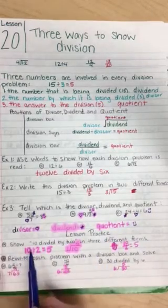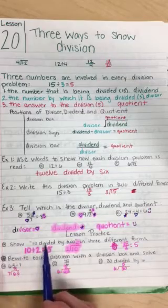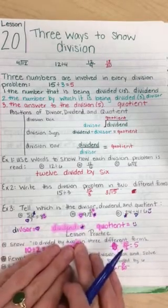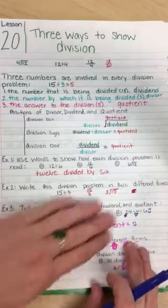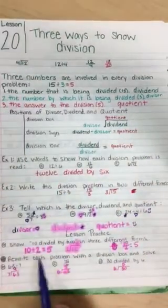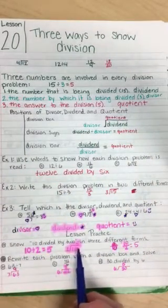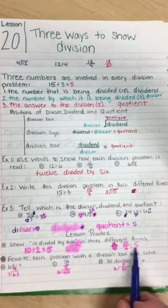Lesson practice. A, show 10 divided by 2 three different ways. I want you to do that, even though you've been looking at it. 10 divided by 2, use the division box, or use the division bar.